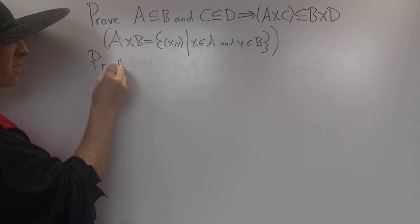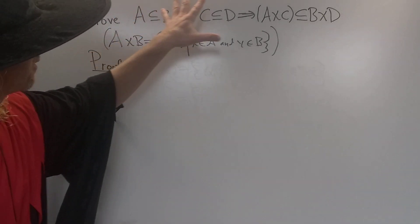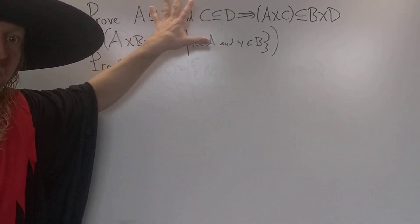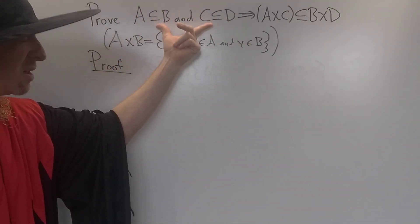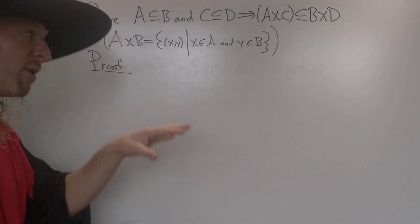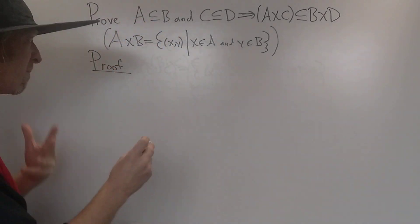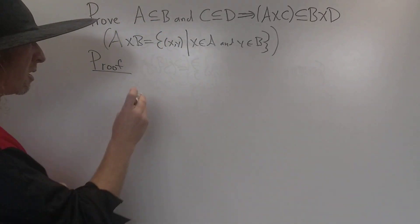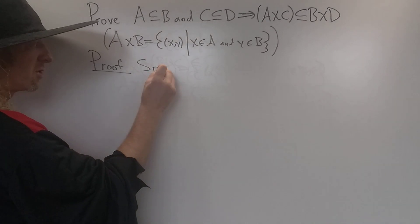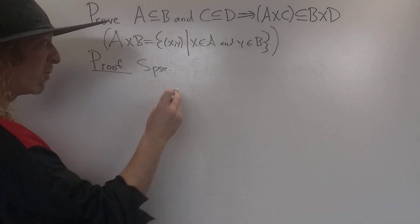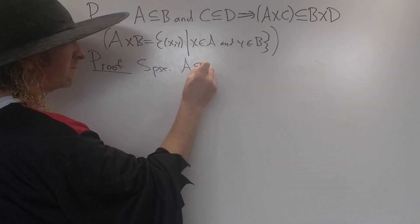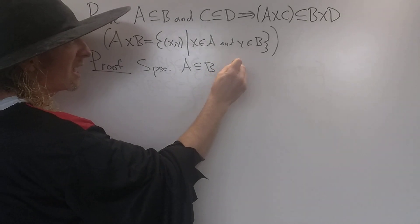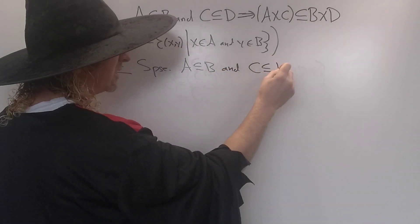Proof. As you know, when you're proving an if-then statement, you assume this part is true. So we start our proof by writing down our assumption. Suppose A is a subset of B and C is a subset of D.